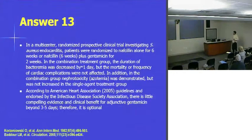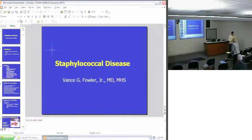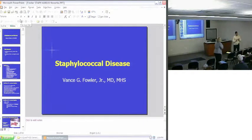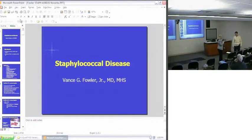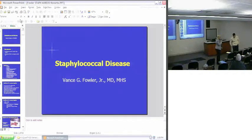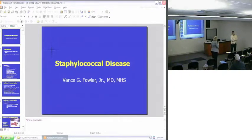In summary, what's the message? Staph aureus is diverse, it's common, and it is increasingly challenging in terms of its antimicrobial resistance. Question from the audience: can you explain the difference between colonization and infection, and where do you find Staphylococcus? Colonization is the presence of staph aureus without clinical infection — the differentiation can seem obvious but can actually be fairly nuanced.